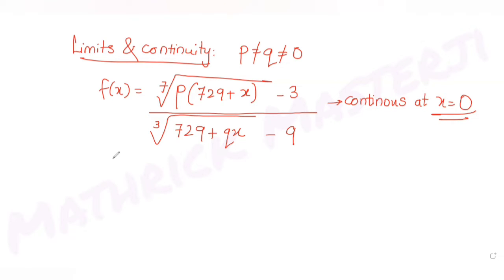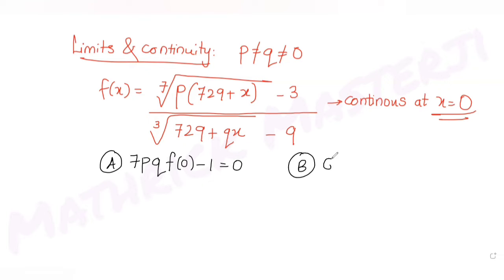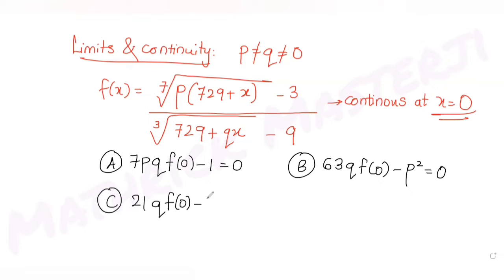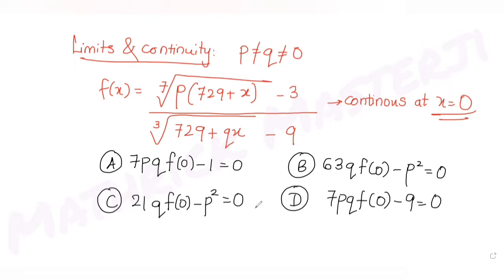We are told this entire function is continuous at x = 0, and the question asks us to find the correct answer choice. The options are: (A) 7pq·f(0) − 1 = 0, (B) 63q·f(0) − p² = 0, (C) 21q·f(0) − p² = 0, and (D) 7pq·f(0) − 9 = 0.